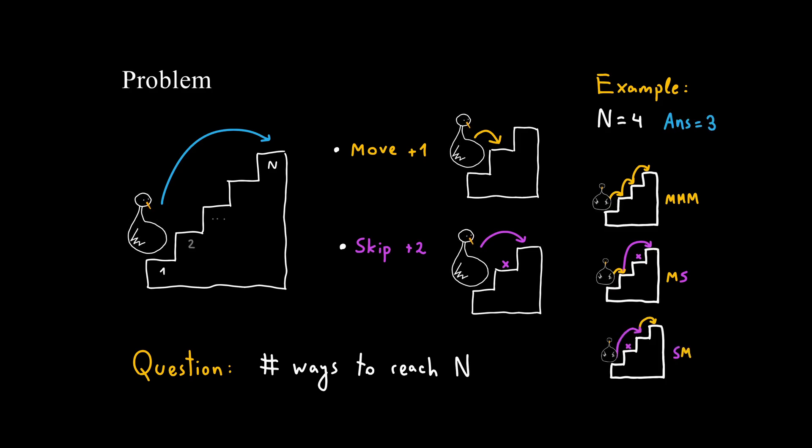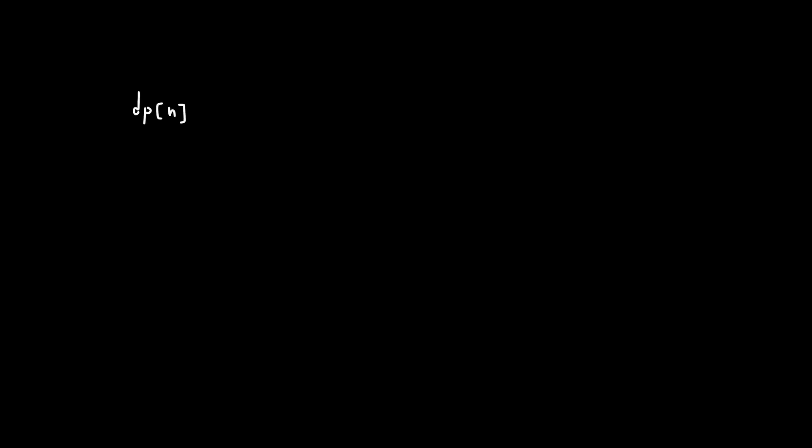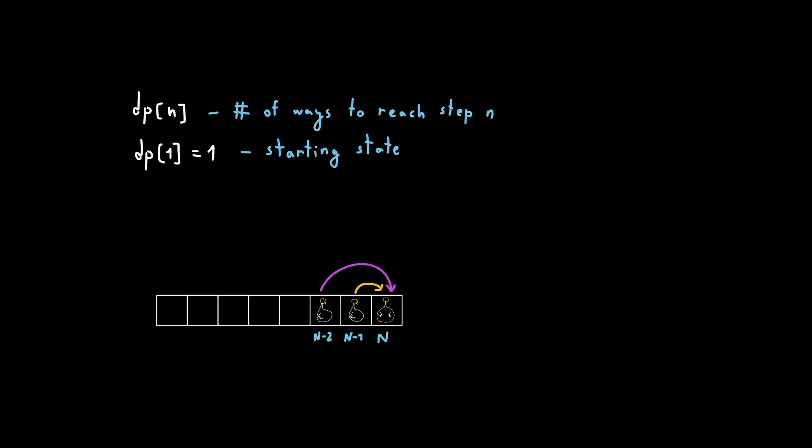Let's first solve it with a familiar backwards DP. We say that DP(N) is the number of ways to reach step number N. DP(1) equals 1 because we already start there. Now, there are two possibilities of how we can reach step N: we either move there from step N-1 or we skip there from step N-2. So DP(N) equals DP(N-1) plus DP(N-2). Note that when N equals 2, we cannot reach it with a skip, since there is no step number 0. So let's put this if here.